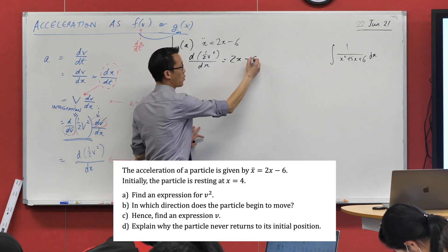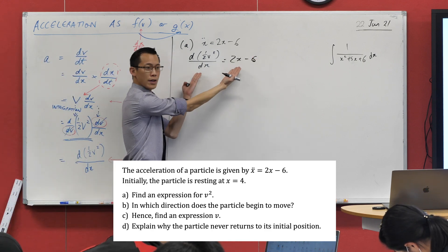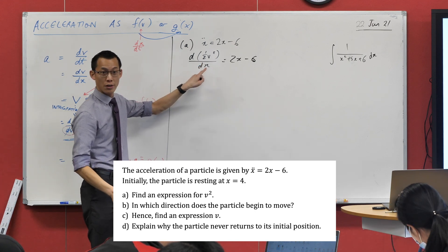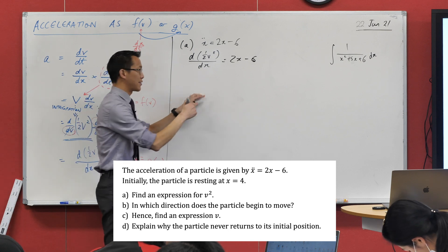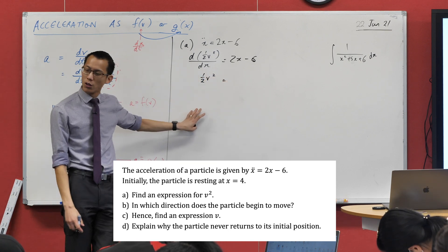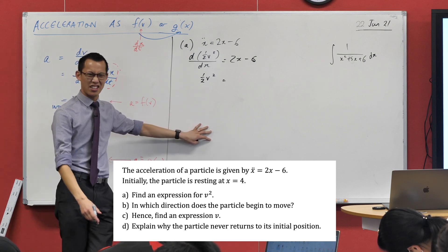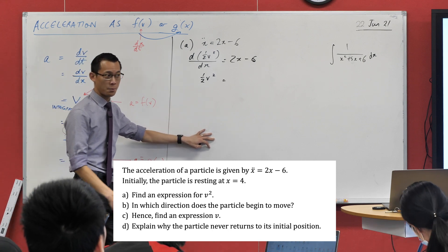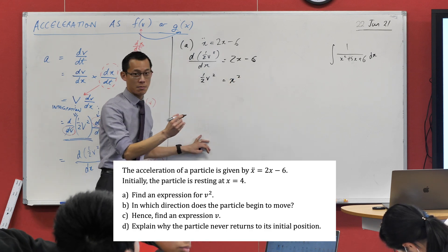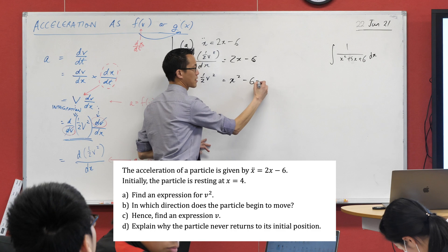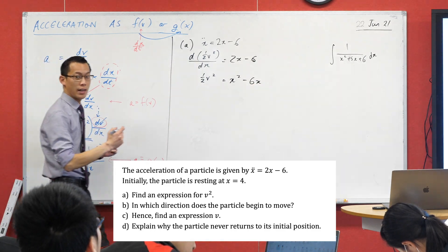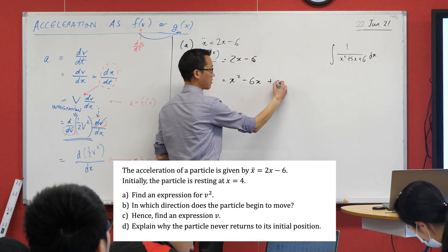So I'm going to go ahead and write that there. d of half v squared on dx equals the equation they've handed me. So what can I do at this point? Well, I've got derivatives. So I'm going to integrate with respect to x. On the left-hand side, I just get this half v squared. On the right-hand side, it's just a polynomial. We know how to integrate this. What does that 2x become? x squared. What does the minus 6 become? Minus 6x. Is this a definite integral? No boundaries. So therefore, I also need constant of integration.